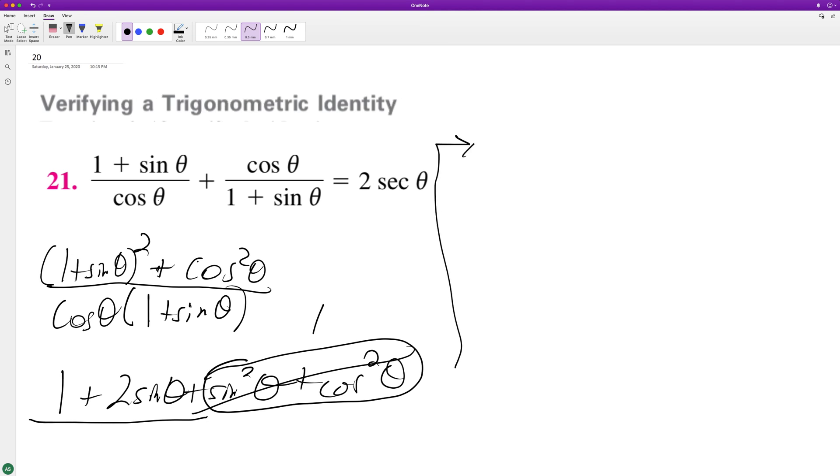So we'll have 2 plus 2 sine theta over cosine theta times 1 plus sine theta. And we can factor out a 2, so we get 2 times 1 plus sine theta over cosine theta times 1 plus sine theta.